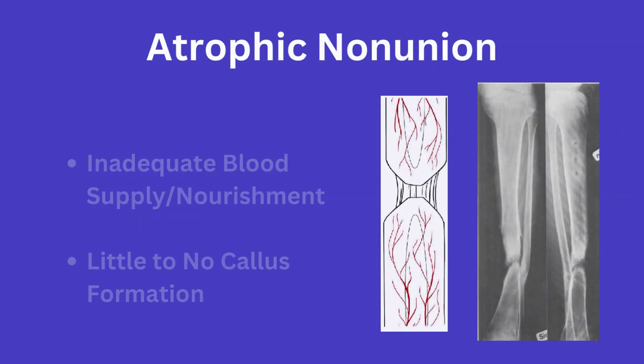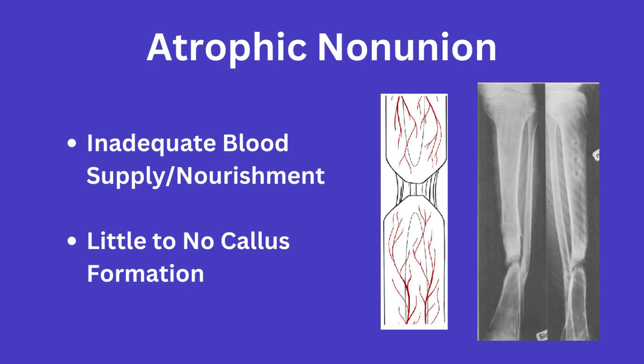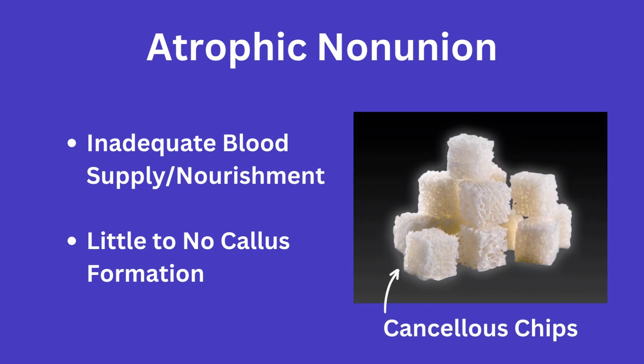Next we have atrophic non-union. Atrophic non-union occurs mainly due to inadequate blood supply to the fracture, whether due to a vascular or metabolic pathology. When the fracture site does not have adequate nourishment, there will be a lack of callus formation, as you can appreciate here, especially compared to the previous example. These are typically corrected with achievement of proper fixation and application of biological stimulants for bone growth, such as bone grafting — whether an autograft taken from the iliac crest or utilizing crushed cancellous chips, etc.